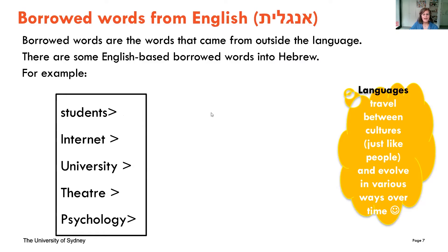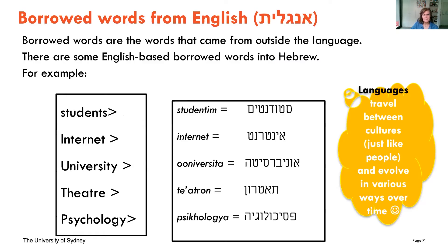Here are the answers: students is 'studentim'; internet stays 'internet' with no change; university is pronounced 'universita'; theater is 'teaton' — and you can probably hear from my accent that we don't have a TH sound in Hebrew; and psychology is 'psychologia,' a word from Greek, and we do pronounce the P at the beginning in Hebrew.